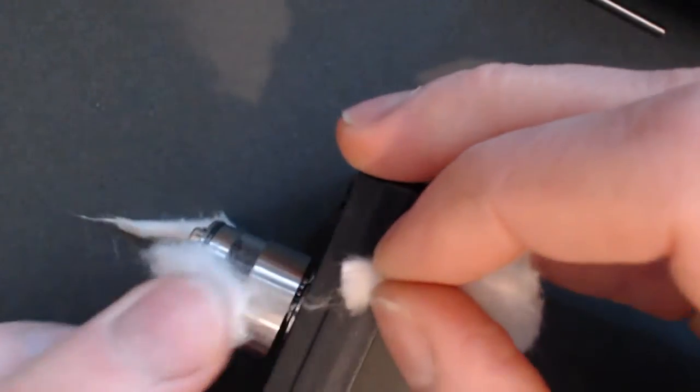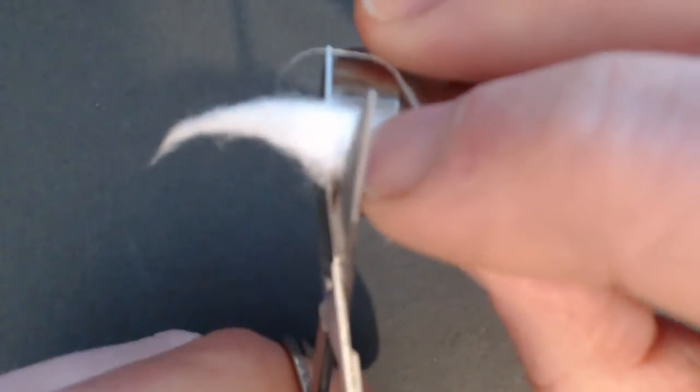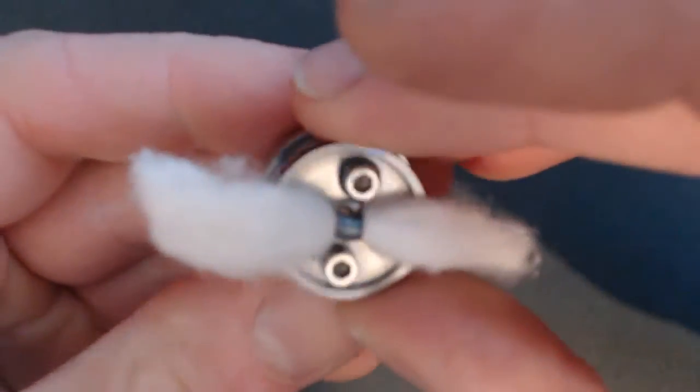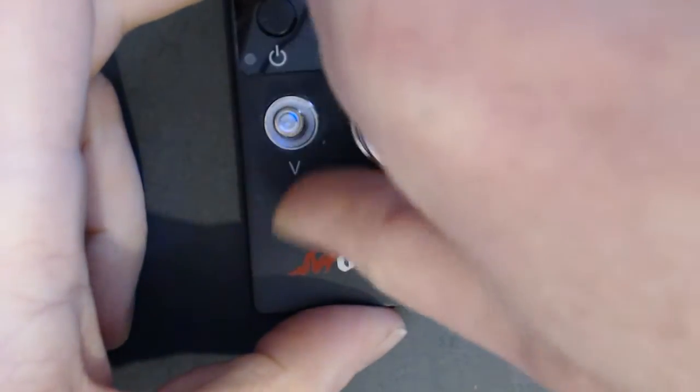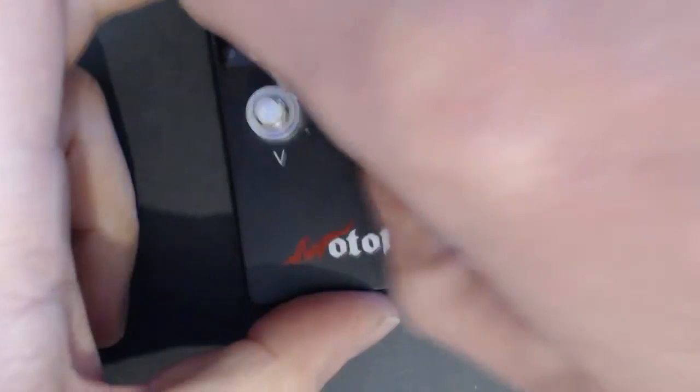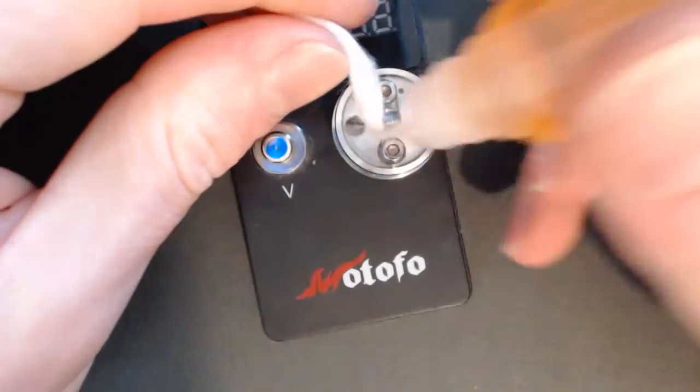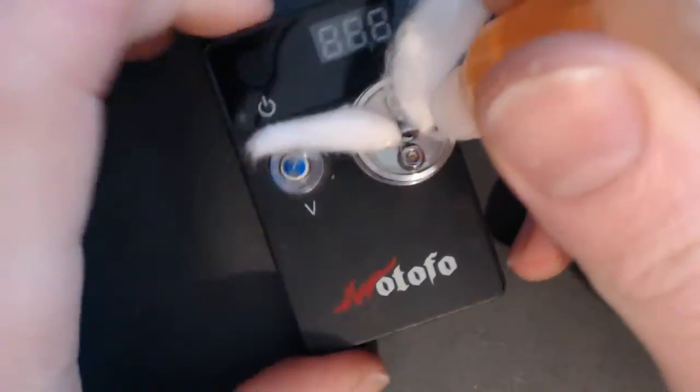So I cut it probably just a mil above the base of the atomizer there. Let's take it off here, I can do the other side a bit easier. There we go, so you can see I've cut that just shy of the base there.